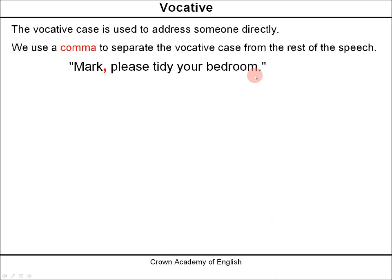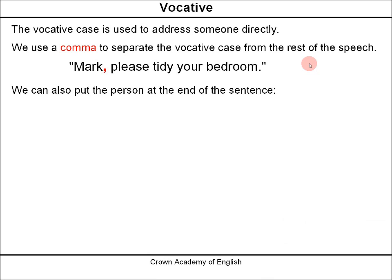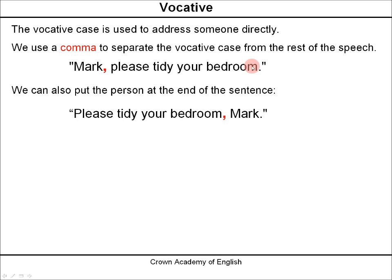We can also put the person at the end of the sentence: 'Please tidy your bedroom, Mark.' This is exactly the same meaning. Here we can see the comma at the end of the speech and before the vocative case. Notice how we write a comma — it is a very small diagonal line at the bottom of the line. And after the comma, there is a space before the next letter.